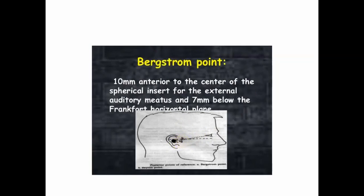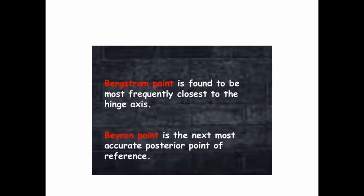Beyron's point is 13 mm from the posterior margin of the tragus of the ear on the cantho-tragal line. Another point is the Bergstrom point: 10 mm anterior to the center of the spherical insert of the external auditory meatus, and 7 mm below the Frankfurt horizontal plane — which passes through the porion and the orbitale. The Bergstrom point is found to be the most frequently closest to the hinge axis, and Beyron's point is the next most accurate posterior reference point.